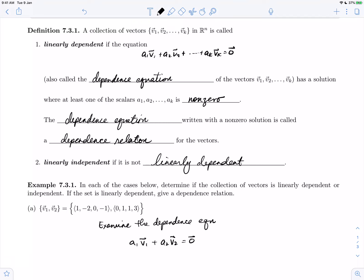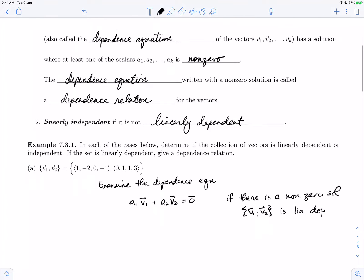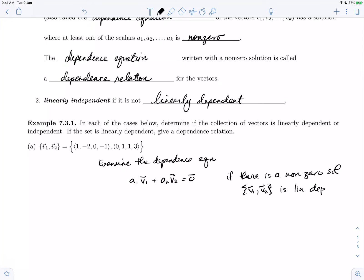We take the definition and say that if there is a non-zero solution, then the set of vectors v1, v2 is linearly dependent. If there is not a non-zero solution, so if there is only the zero solution, then the set v1, v2 is linearly independent.